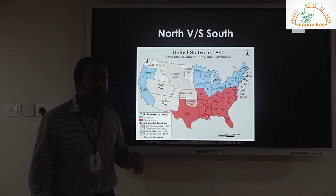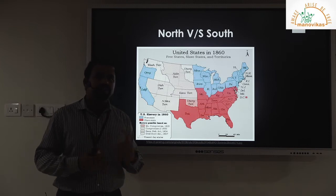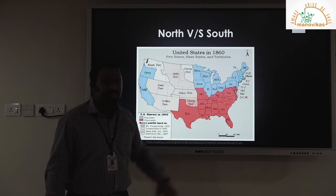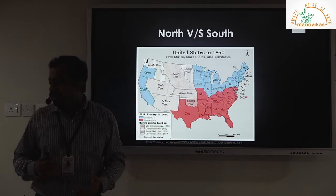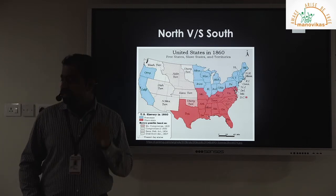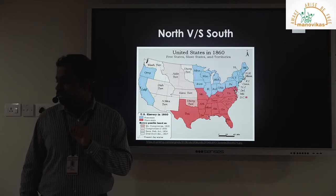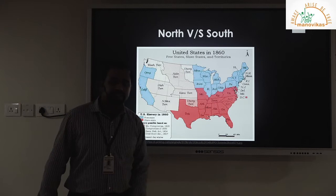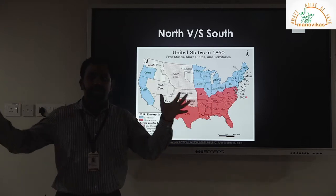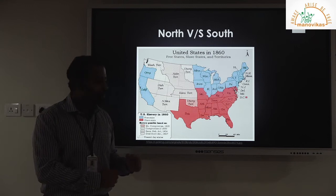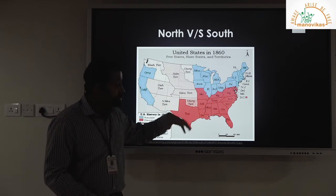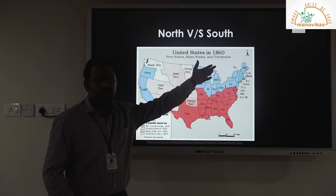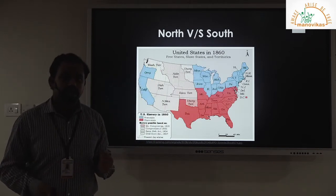The blue patch represents states where slavery was in practice but the north was not strongly against it at first. We can understand this with the Fugitive Slave Act of 1850. As per this act, any slave who ran away from the owner's estate would be captured and given back to the owner — whether that person was in the south or the north, it did not matter; if caught, they would be returned.